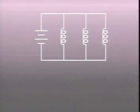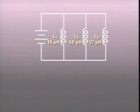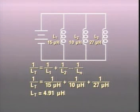In this circuit, there are three inductors connected in parallel with inductance values of 15, 10, and 27 microhenries. The total inductance of this circuit is found by taking the reciprocal of each inductance value, adding the reciprocals together, and then taking the reciprocal again.